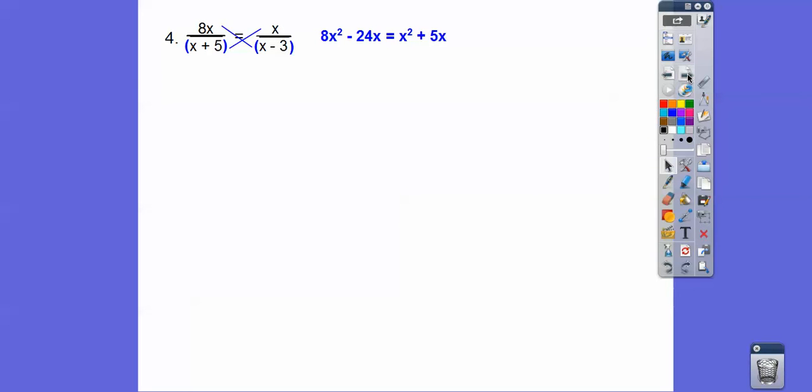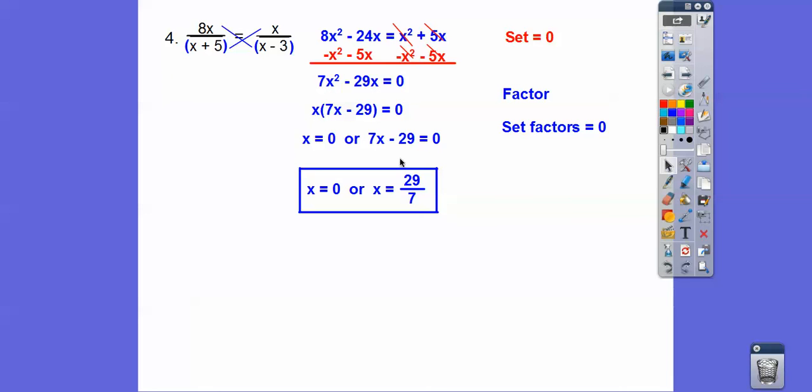So cross multiply. And then set it equal to 0 because it's a quadratic. So we'll subtract the x squared and the 5x. And then we factor that. We can GCF out an x. And then we set the factors equal to 0. And then we add 29 to both sides and divide by 7 and we get 29 sevenths.